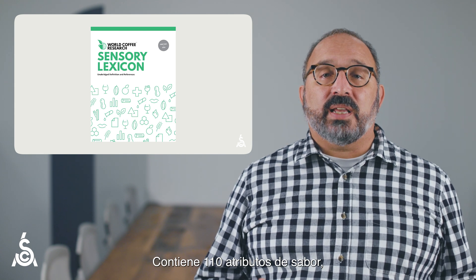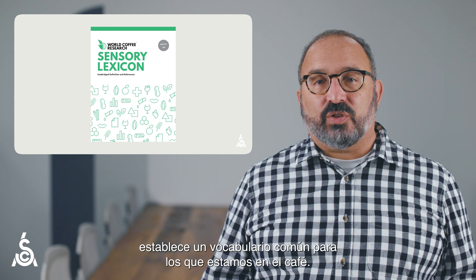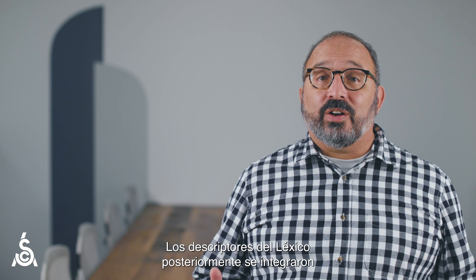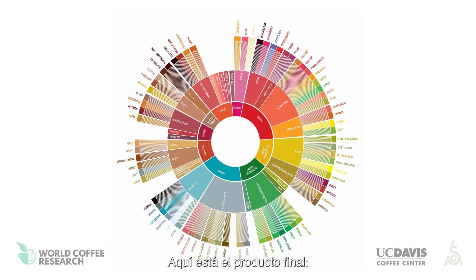The WCR lexicon includes 110 flavor, aroma, and texture attributes in coffee, and literally sets a common vocabulary for us in the coffee trade. The lexicon descriptors were later integrated into a flavor wheel following joint work by WCR, SCA, and the University of California at Davis. Here is the final product: the SCA WCR Coffee Taster's Flavor Wheel.